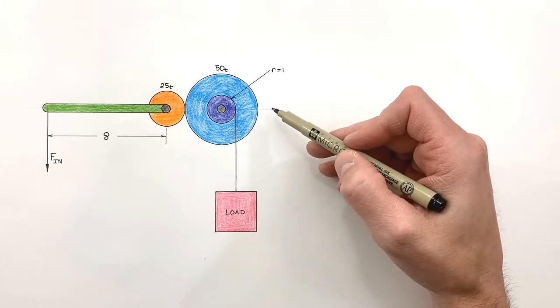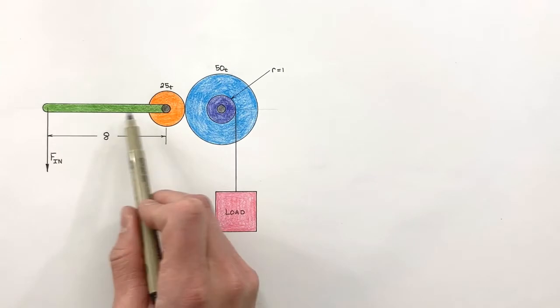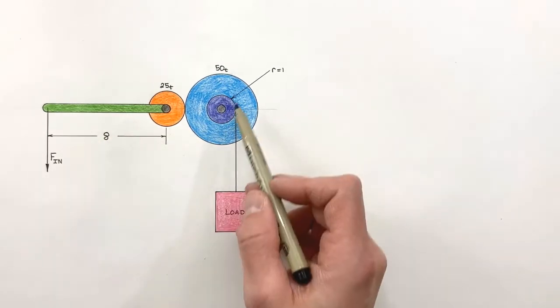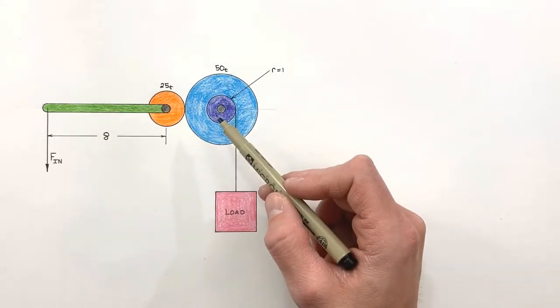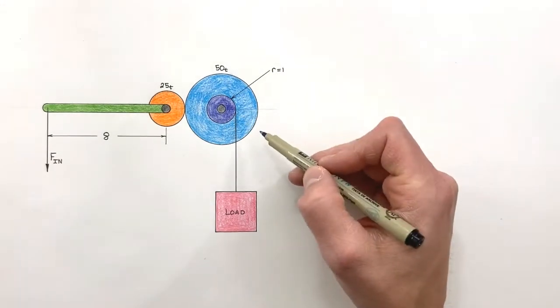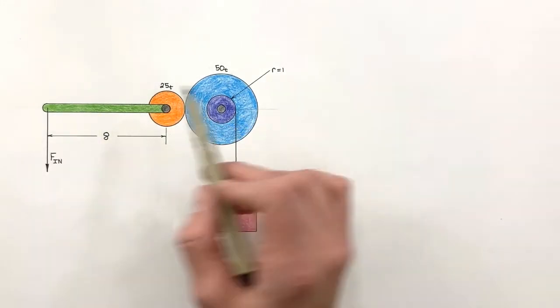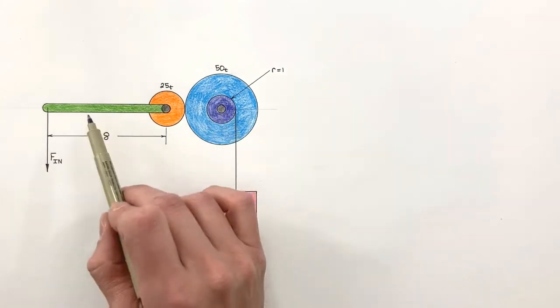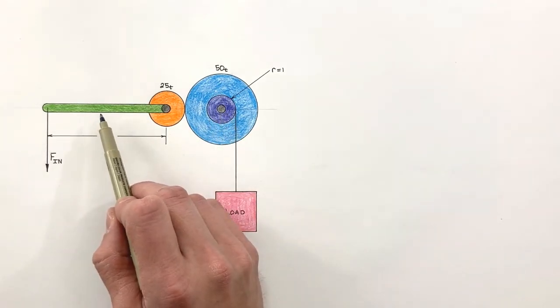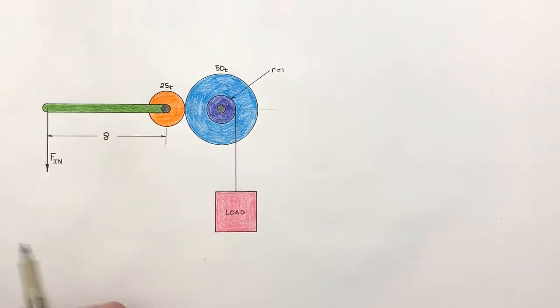And that is when we start dealing with simple machines like levers and pulleys along with gears. Now the issue that comes up when dealing with simple machines alongside gears is that simple machines are typically dealt with in terms of distances or linear distances.